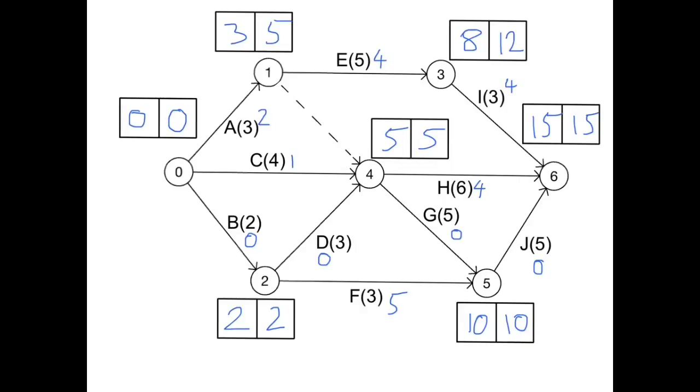And finally, all that remains is for us to draw the critical path along all of the activities that have a float of 0. So we're going to go along B, and then D, and then G, and finally J. And there's our critical path.